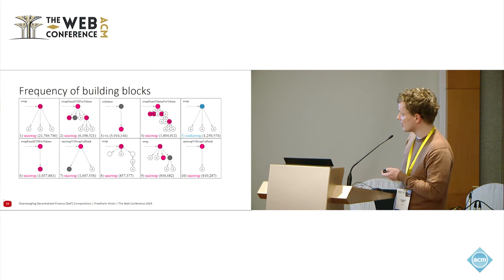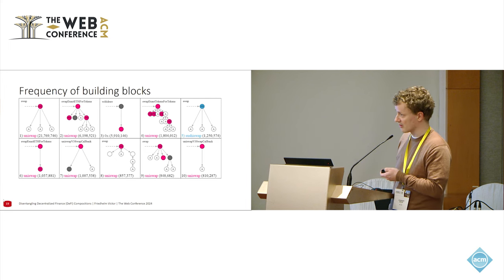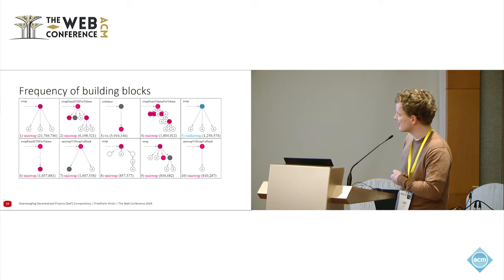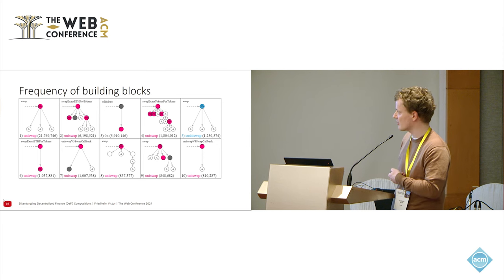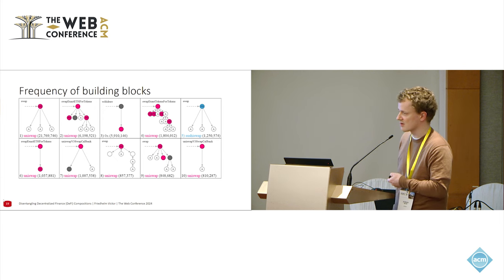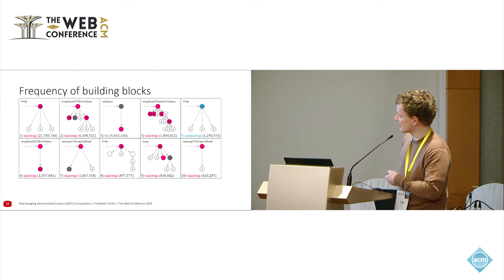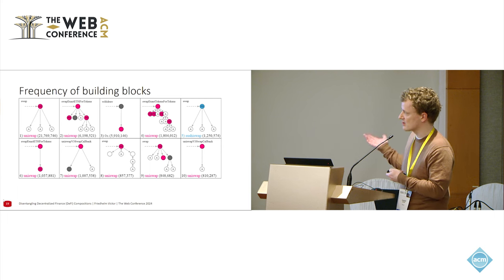Once we have these building blocks, we can count which ones appear particularly frequently and how they might be nested. For example, a swap call making three calls to assets appears 21 million times in our timeframe. The very same pattern for SushiSwap looks exactly the same and happens a bit less — which is expected since SushiSwap is actually a clone of Uniswap. This pattern is also essentially contained within the larger pattern, allowing us to identify building blocks and find what's very common.